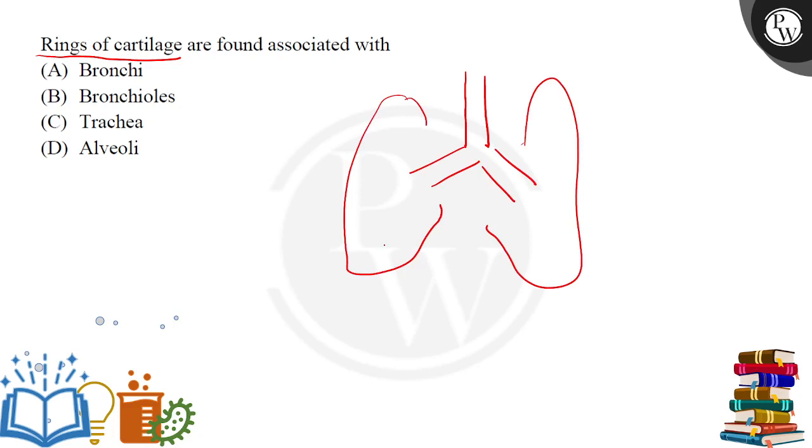This is our bronchi, and then further this will be divided into bronchioles. And finally what will we have in the end? Alveoli, which is the exchange site of the gases. Now we have to tell you where rings of cartilage will come from here.